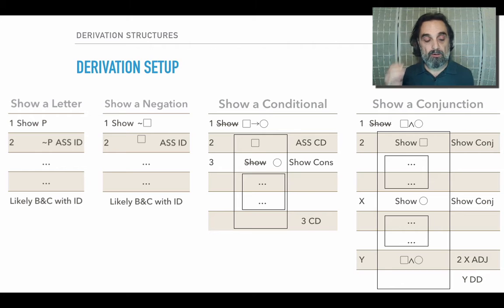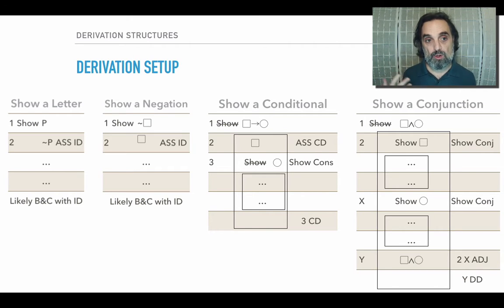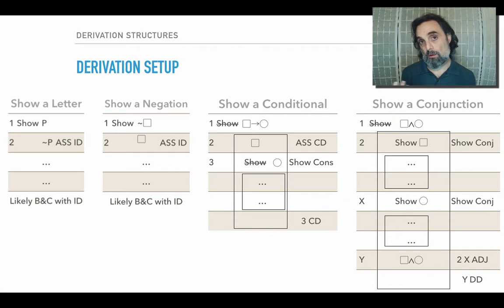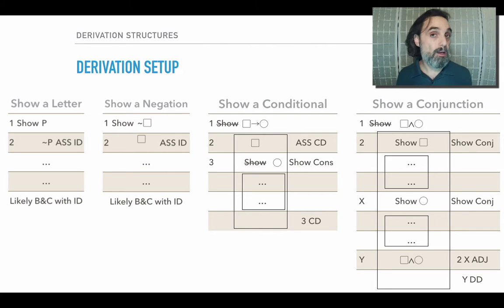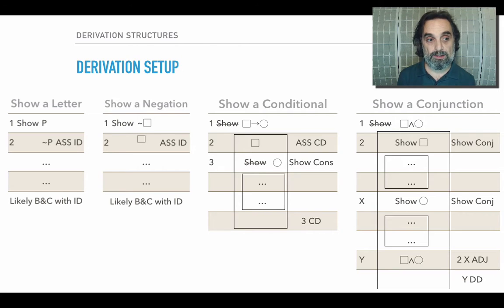When we're setting up a derivation, how are we going to proceed? Well, it depends upon what we're trying to show. So if we're trying to show a letter, then we'll assume ID and proceed, and probably we'll box and cancel with ID. We might box and cancel with DD, but it's likely that we'll box and cancel with CD, and so we want to be looking for a contradiction.